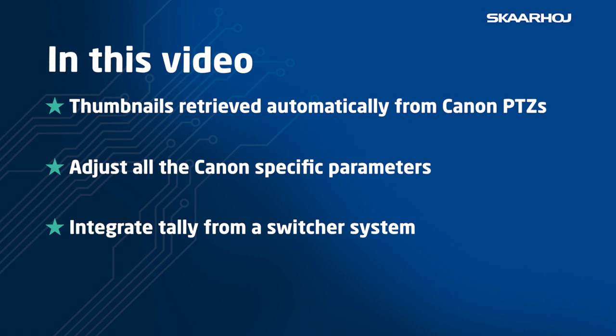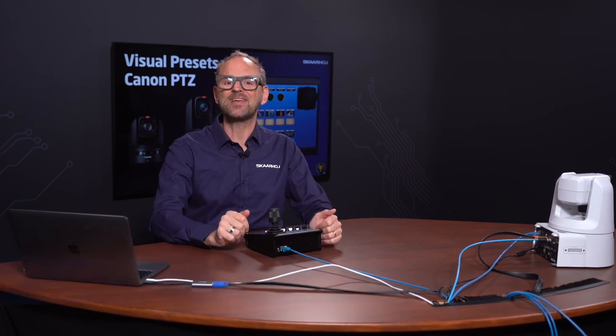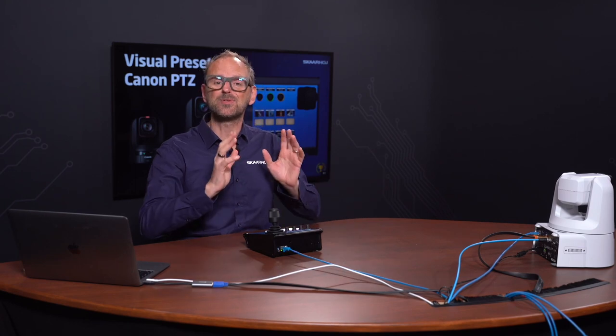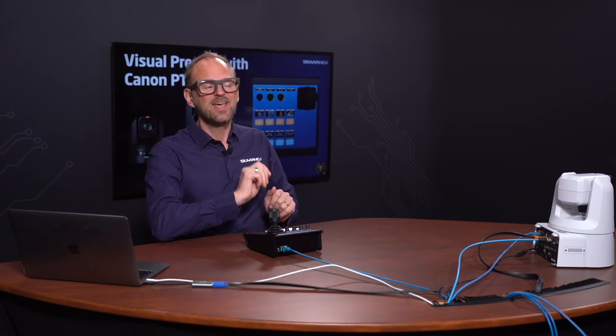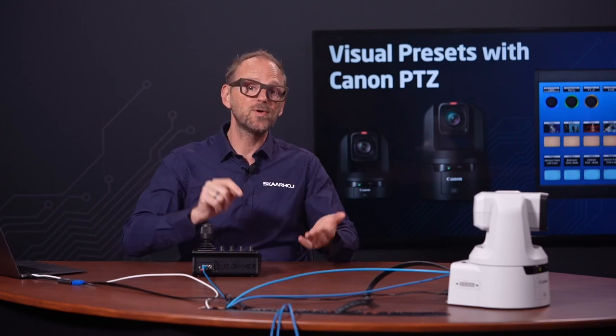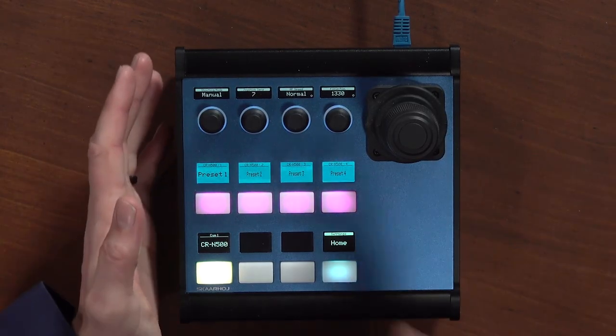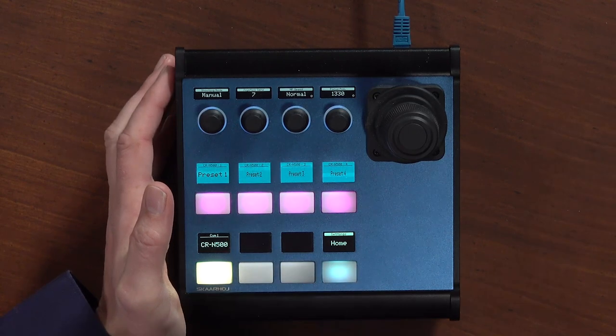With MK2 and Canon's CR series of PTZ cameras, it has never been easier to have a church volunteer or an untrained colleague at a corporate event produce consistent and professional results. The unique color thumbnails of stored preset positions for each camera will do away with the uncertainty you faced before — where you had post-it notes and scribbles to keep track of your presets. When a preset needs its content updated, a simple re-store of the preset will generate a new thumbnail automatically.